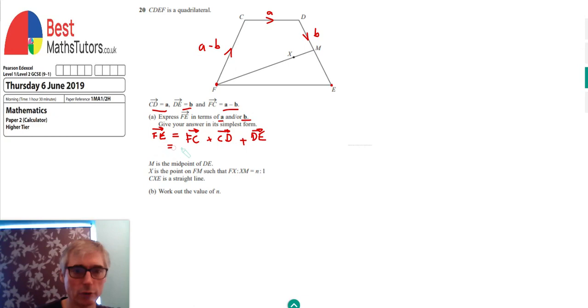Because we do know what they are, FC is A minus B, CD is A, and DE is B. If we tidy that up, we can see the B's will cancel, minus B and plus B, and that will just give us 2A. So we've completed that part.